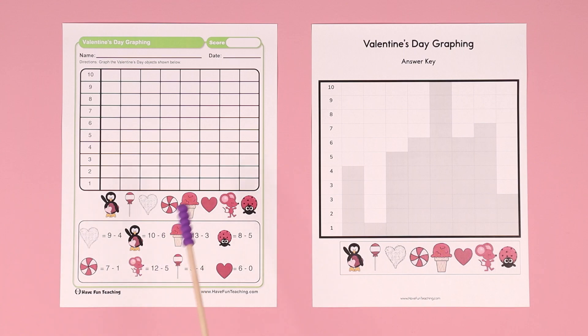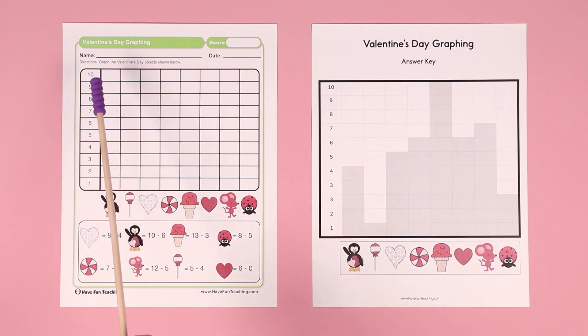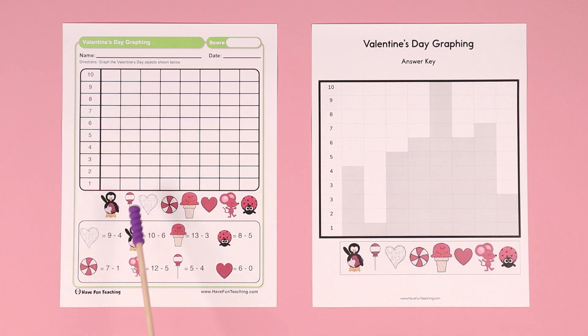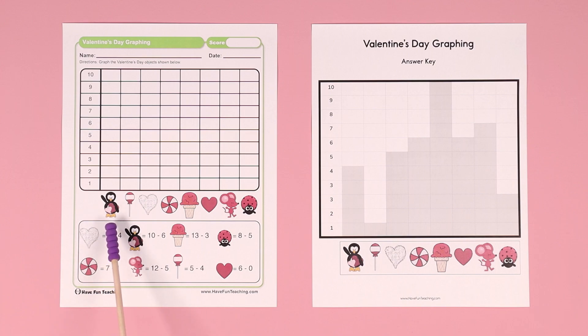In this worksheet, you graph the Valentine's Day objects shown below. Underneath each column of the bar graph is a picture. In this example, the first column shows a picture of a penguin.